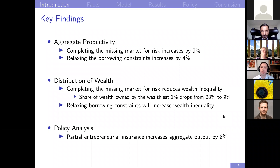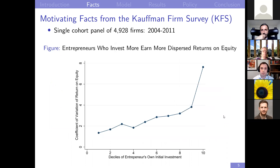By contrast, relaxing the borrowing constraints increases wealth inequality, so there is a traditional equity-efficiency trade-off. In the final policy analysis part of the paper, I consider a simple partial insurance scheme for entrepreneurs that successfully increases aggregate output by 8% in the model.